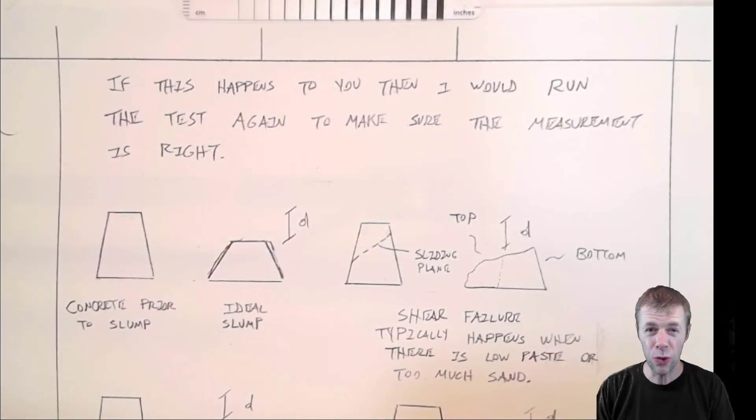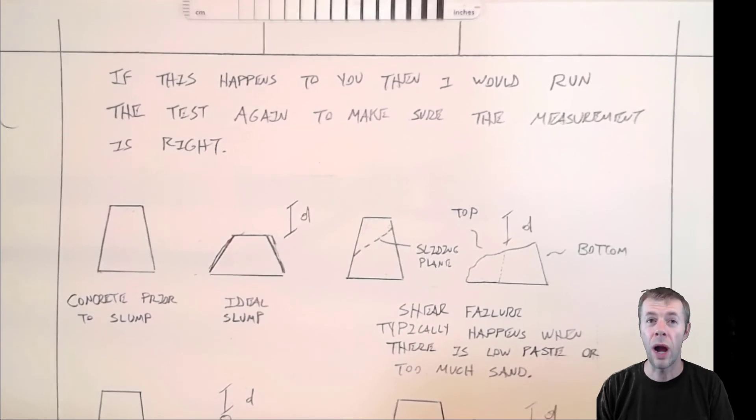If any of these things happen to you, then the first thing I would do is probably run the slump test again to make sure that you didn't make some kind of mistake. If it starts to happen again and again, it's probably a clue there could be something wrong.